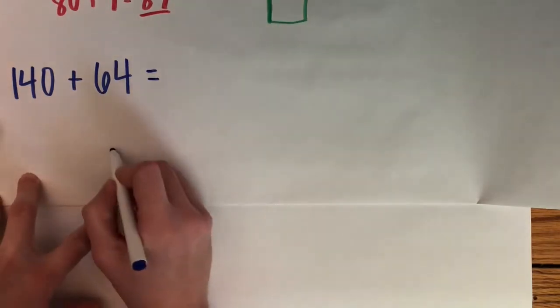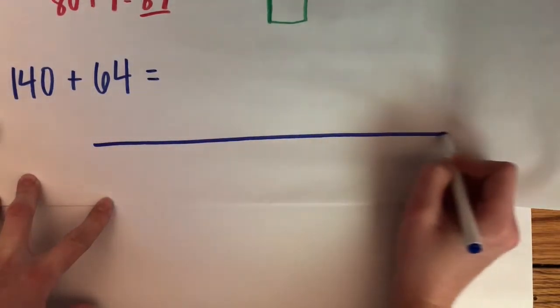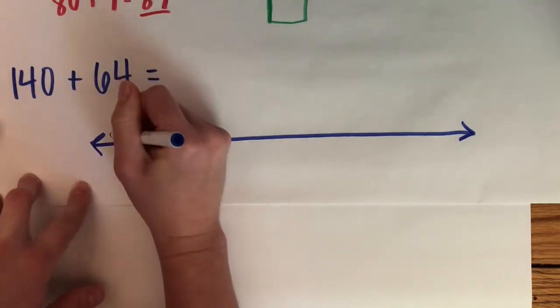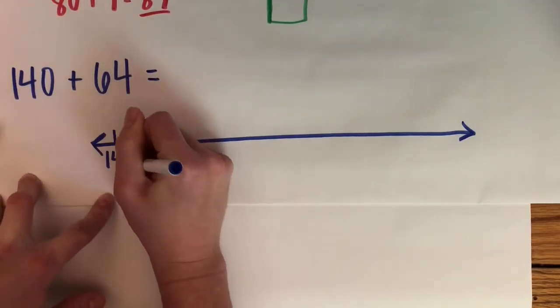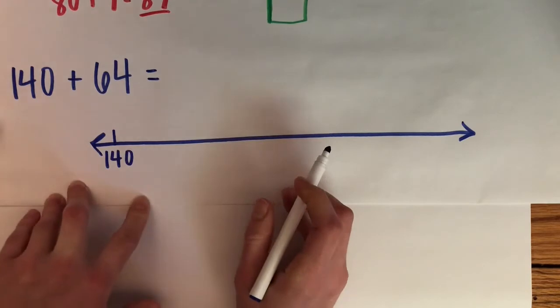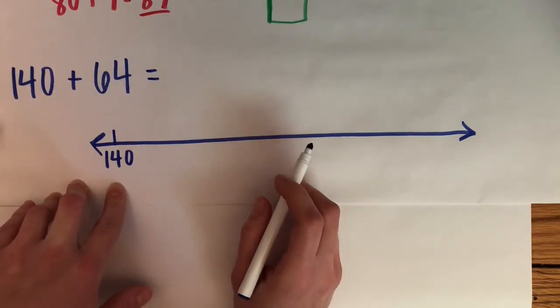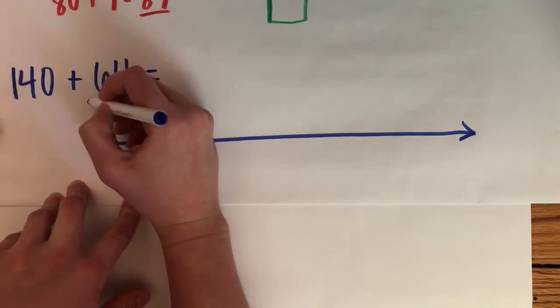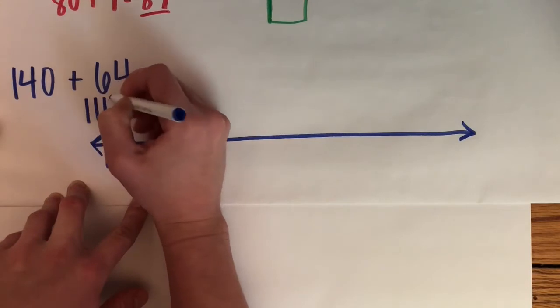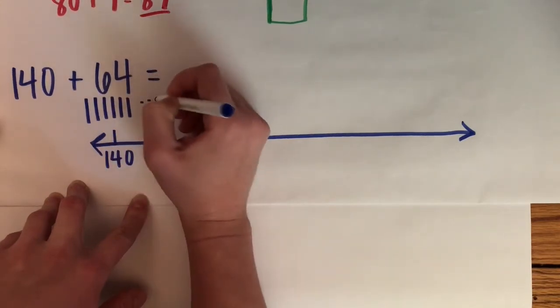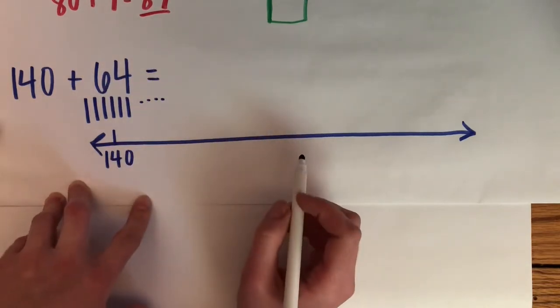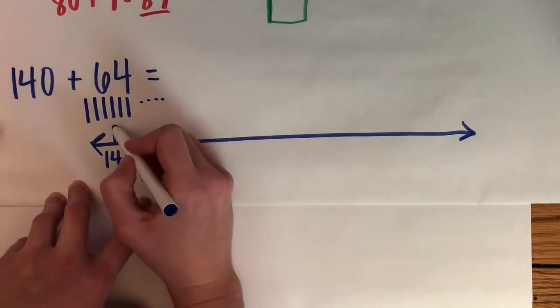This time I'm going to use a number line. So I'm going to draw my number line. I'm going to start at 140 and I'm going to count on 64. I'm going to draw some base 10 blocks to make sure that I get all my hops in. So I have 6 tens. So I'm going to make a big hop of 60.